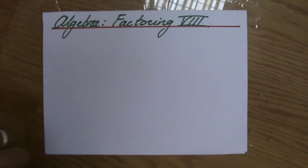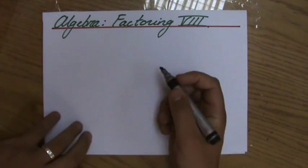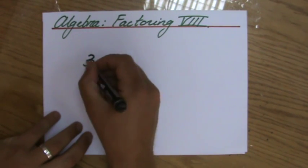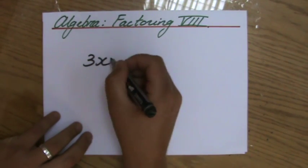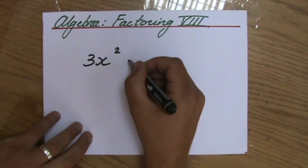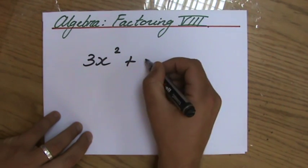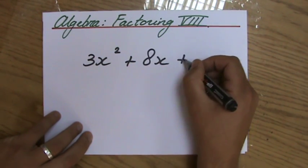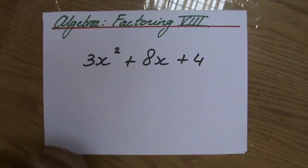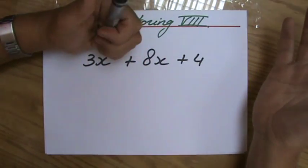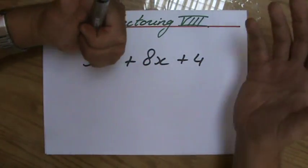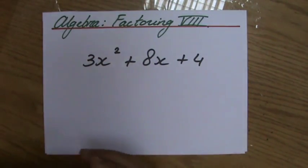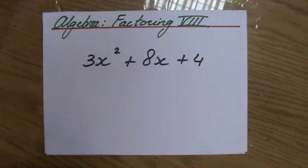My experience is that students — and actually myself included, because I'm a student myself — we don't like this one. This is the one we like the least of all the different types of factoring. But some things in life you like a little bit less; there's nothing wrong with that. So don't feel frustrated or angry, just work twice as hard.